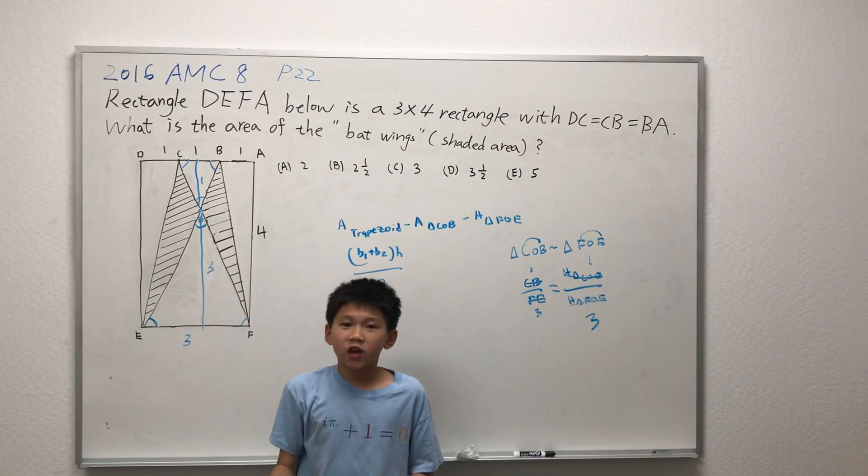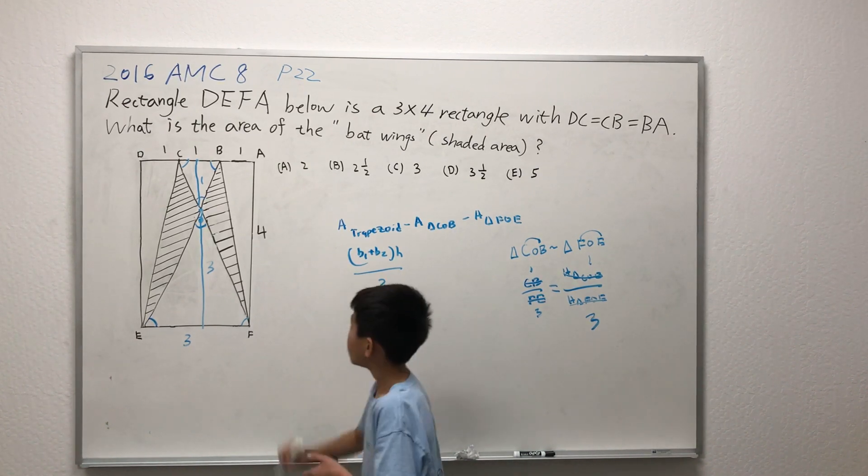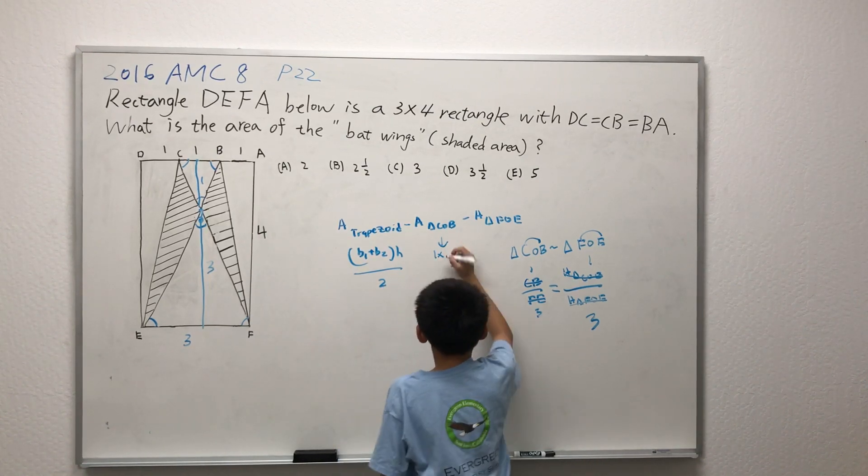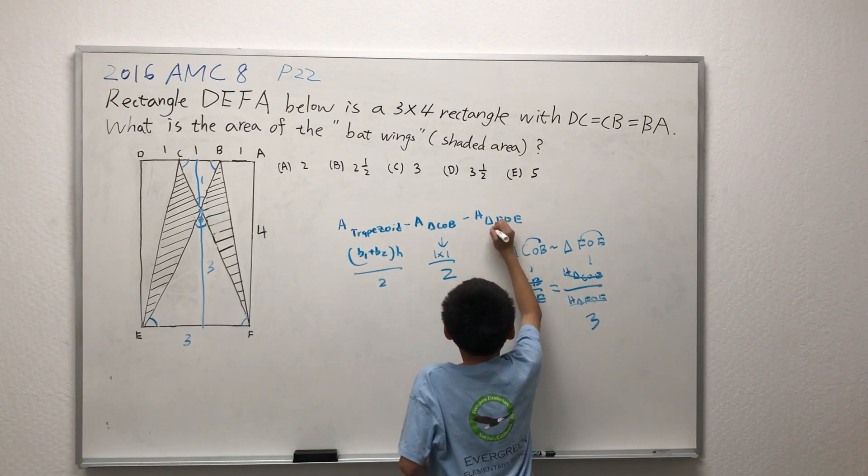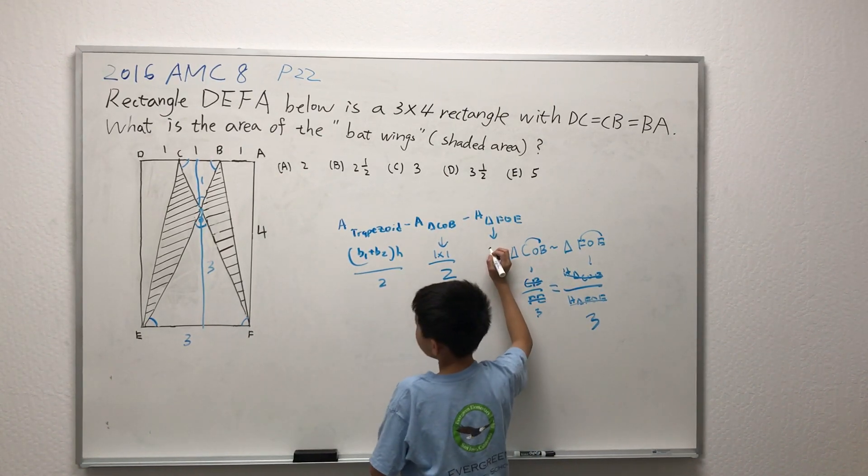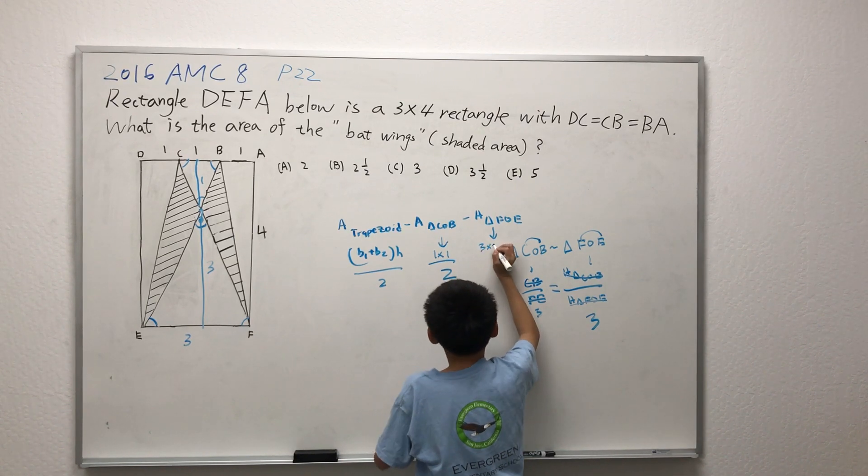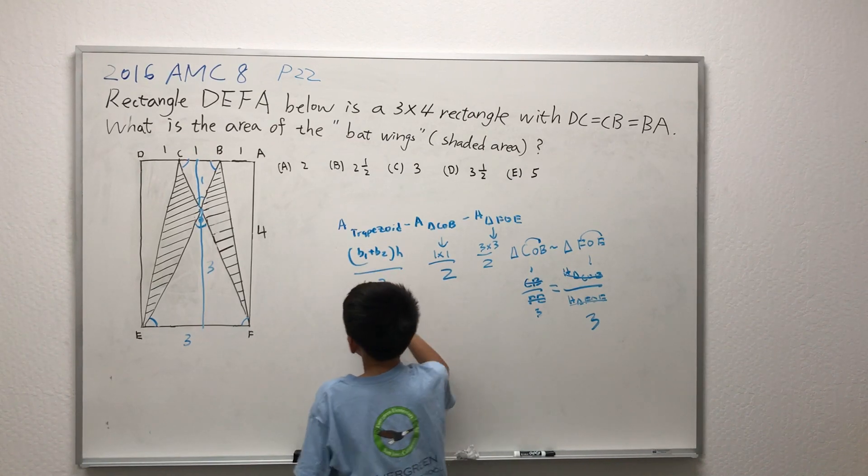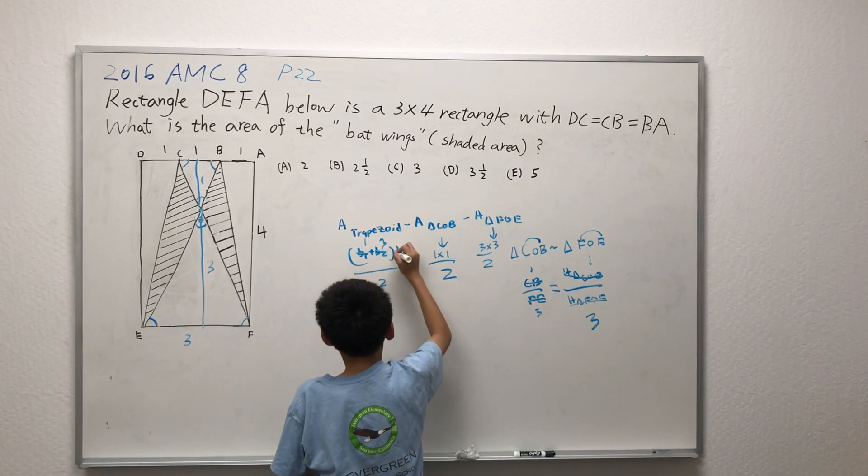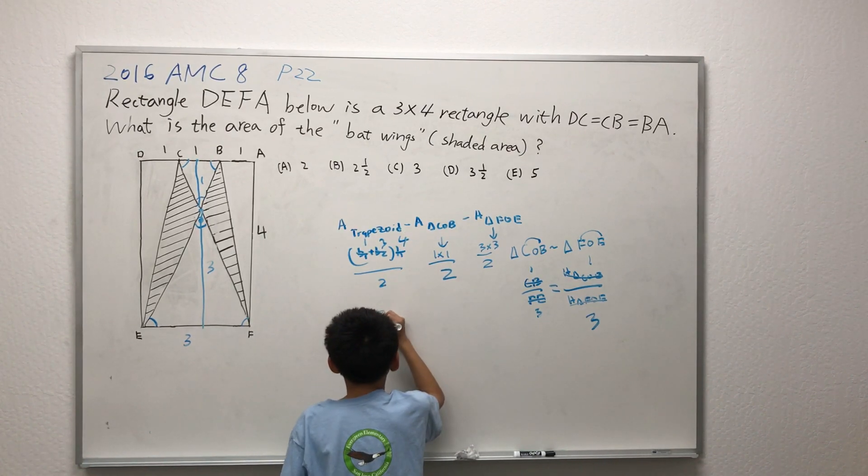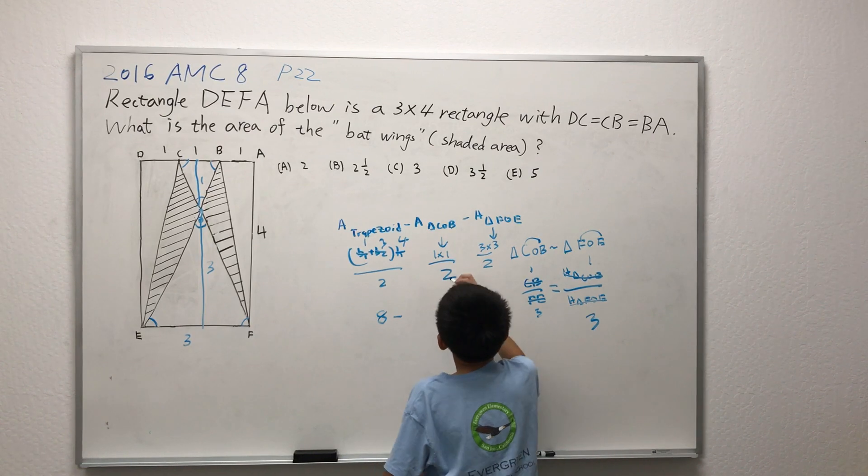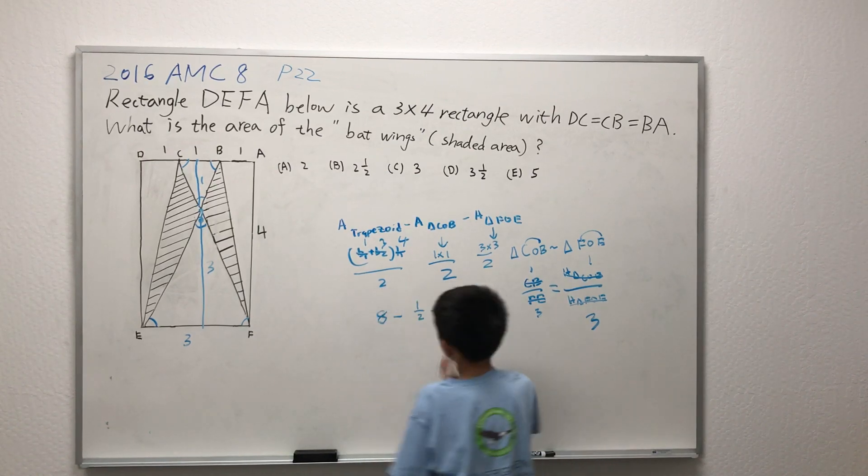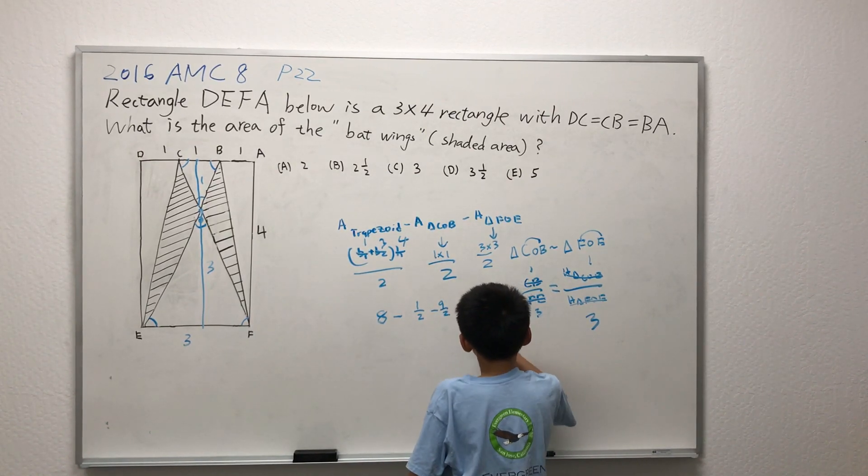We all know that the area of the triangle is 1 half base times height. The base of triangle COB is 1 and the height of triangle COB is 1. Now, the base of triangle FOE is 3 and the height is 3 as well. Substituting in values for the area of the trapezoid: Base 1 is 1, base 2 is 3, height is 4. We get the area of the trapezoid is 8 and the area of triangle COB is 1 half and the area of triangle FOE is 9 over 2. We simplify to get that the answer is 3.